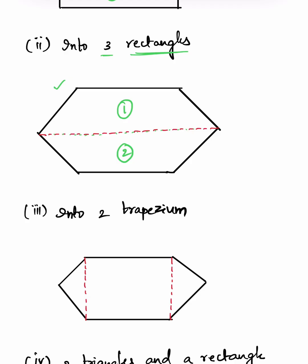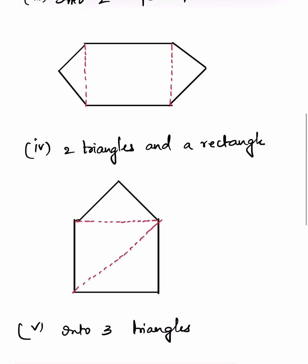For the fourth figure, we have to divide it into two triangles and a rectangle. By drawing these two red lines, the figure is divided into three parts: the first triangle, second triangle, and third part which is a rectangle. We calculate the areas of the two triangles and add them to the area of the rectangle to get the area of the whole figure.